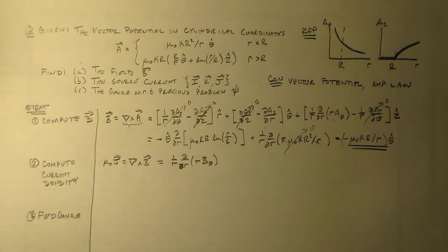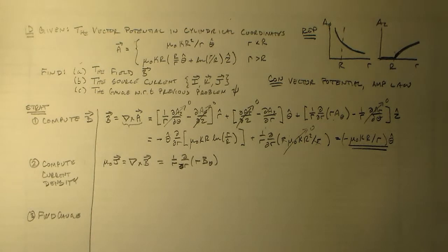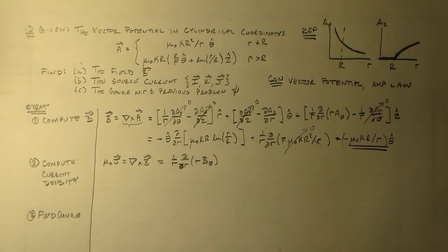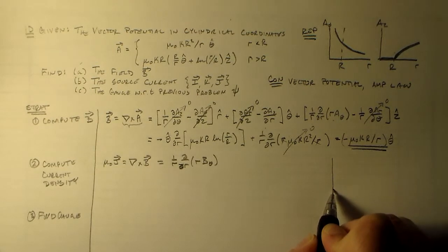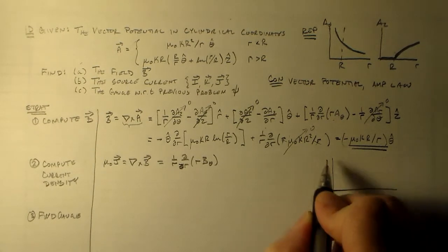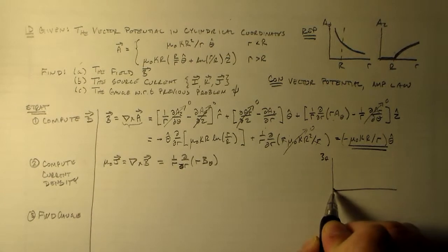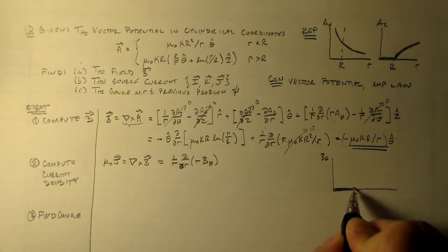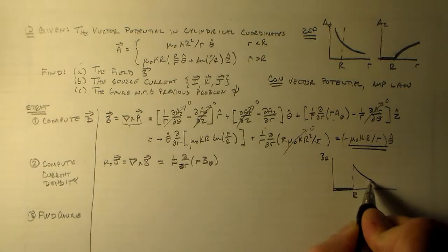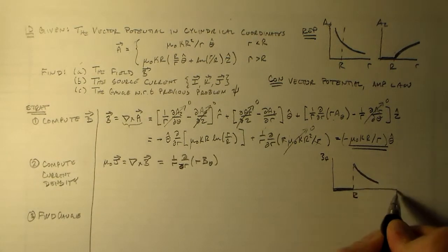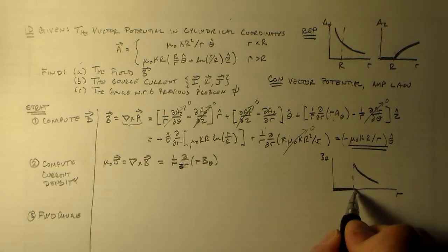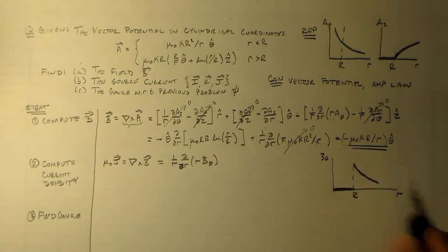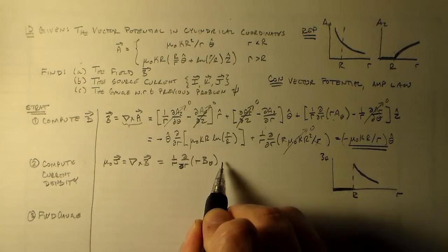Now if we look at this b theta correctly, it's going to look like this. At big R, it's zero except after big R. So there's a discontinuity there, and here the derivative is zero.